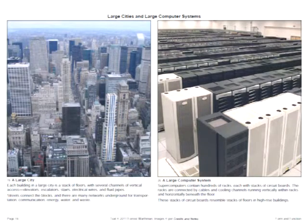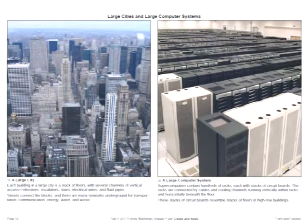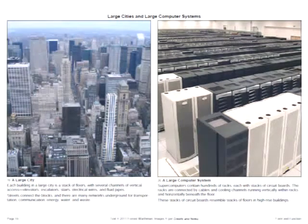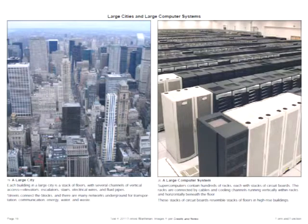Zooming out further, you get a whole image of a set of high-rise buildings — this is downtown Manhattan. On the right, a large collection of computer racks in a supercomputer at Los Alamos. The computer racks have vertical connectivity for electrical power, signaling, and cooling, and horizontal connectivity beneath the floor. The city buildings have a similar arrangement, although the vertical connectivity is a much richer collection of types. Below street level, there's a complex transportation system and many hidden services.